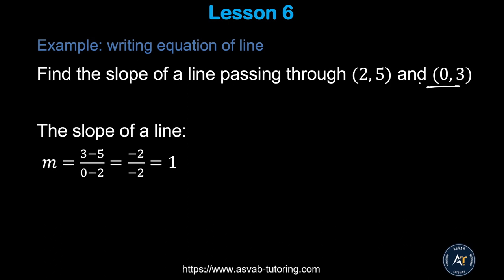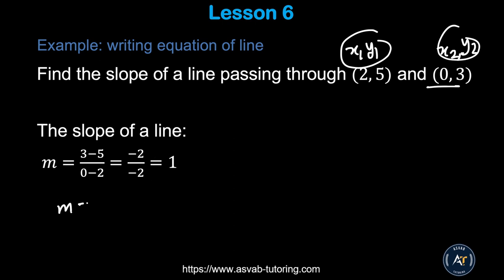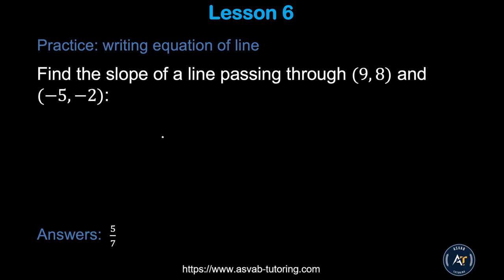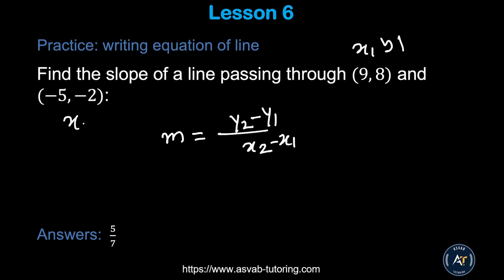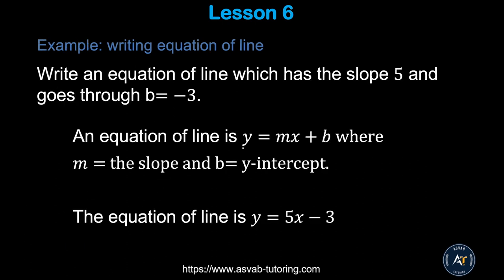Let's apply this formula: find the slope of a line passing through (2, 5) and (0, 3). Label them x1, y1 and x2, y2. Plugging in: (3 − 5) / (0 − 2) = −2 / −2 = 1. So m = 1. Now try the practice problem yourself using the same formula and make sure you get the correct answer.